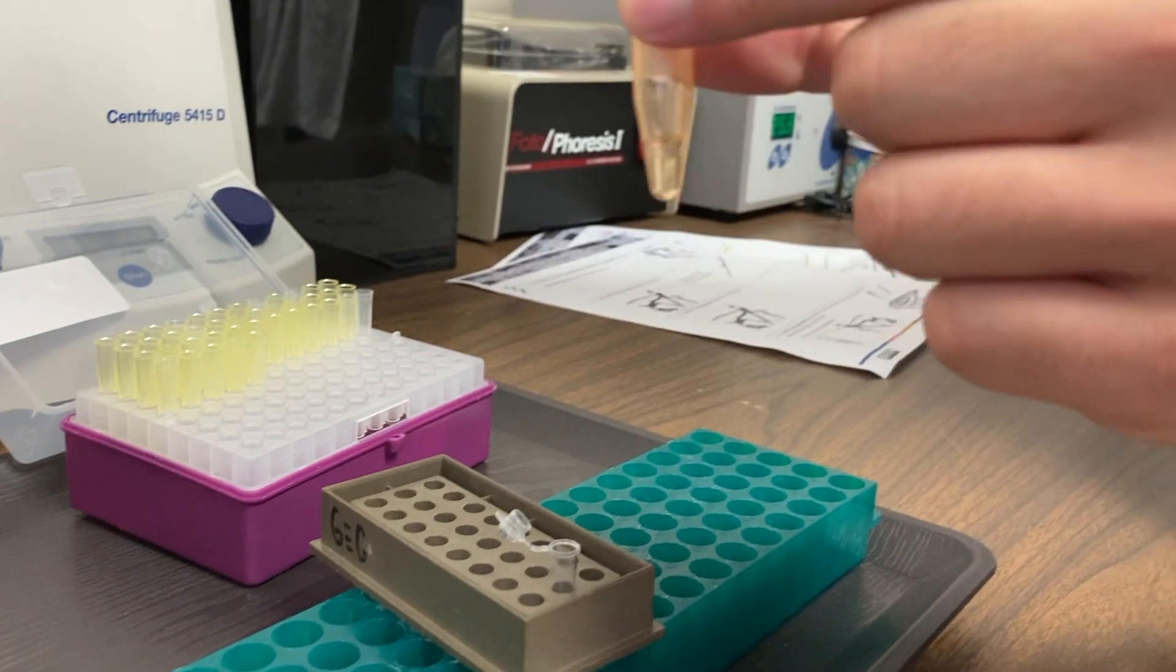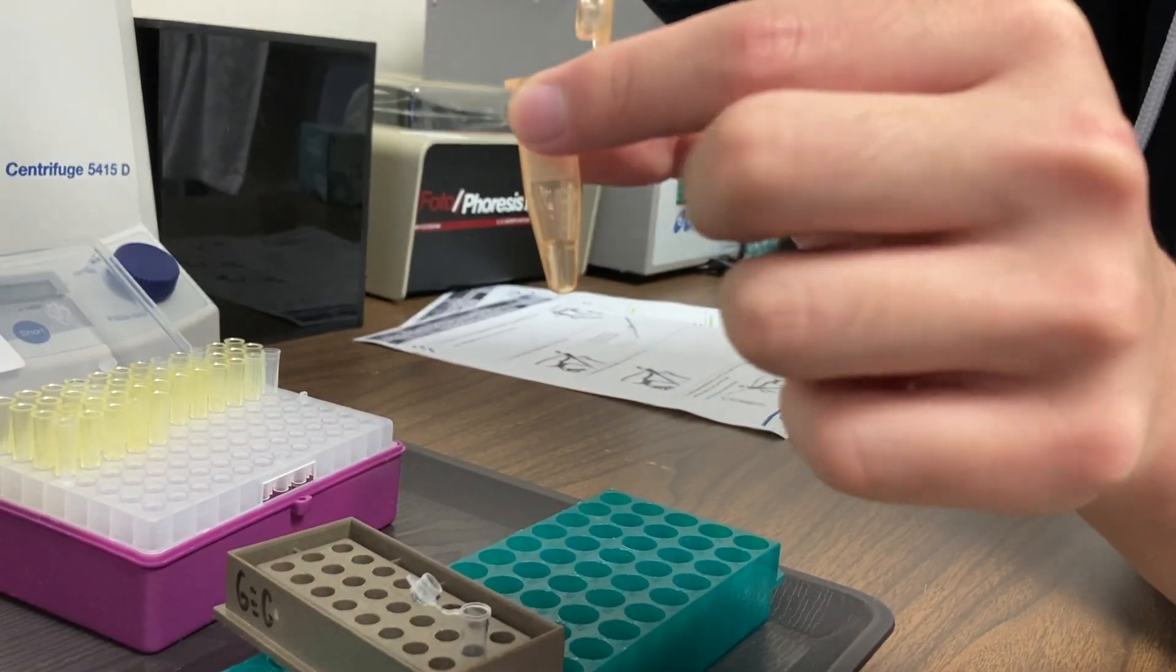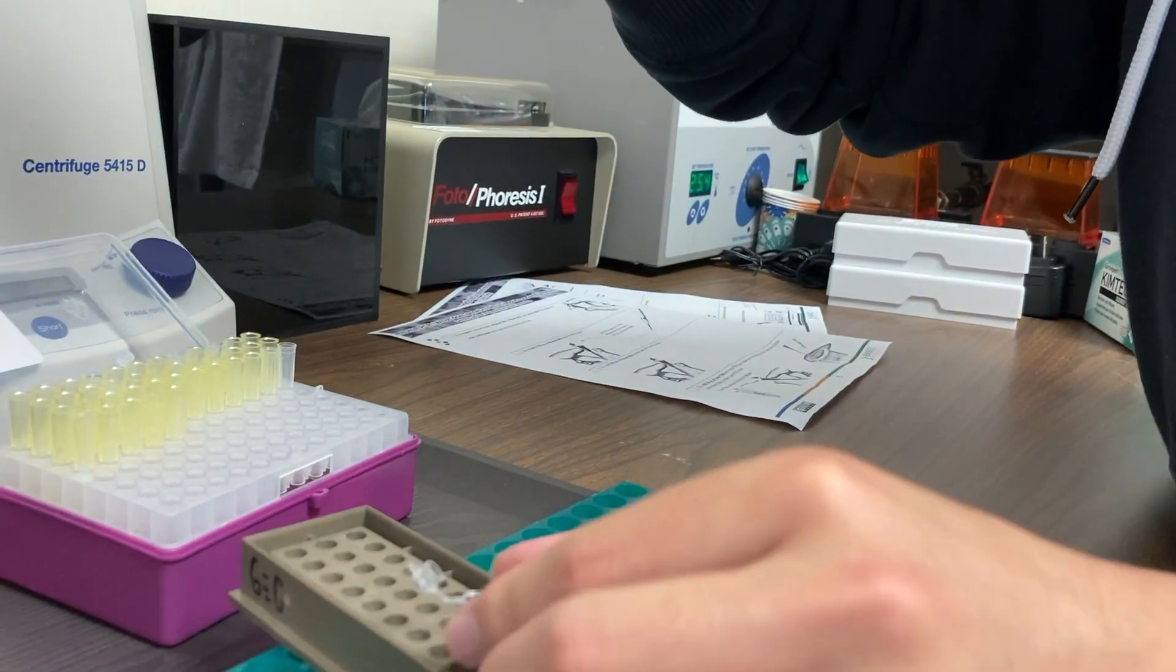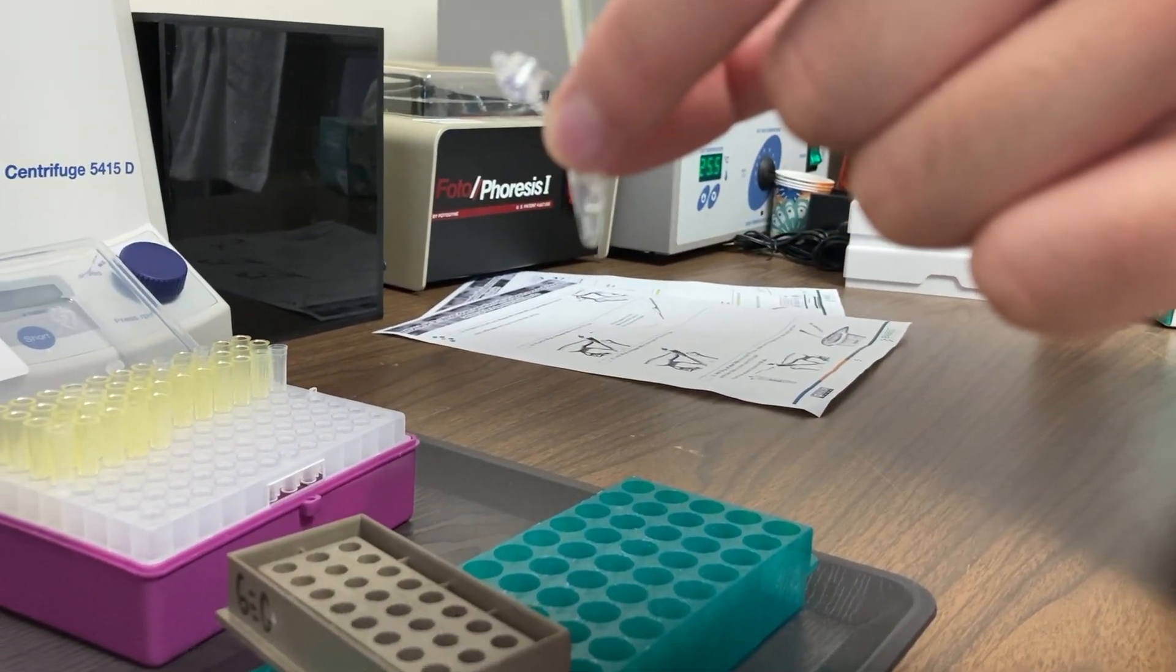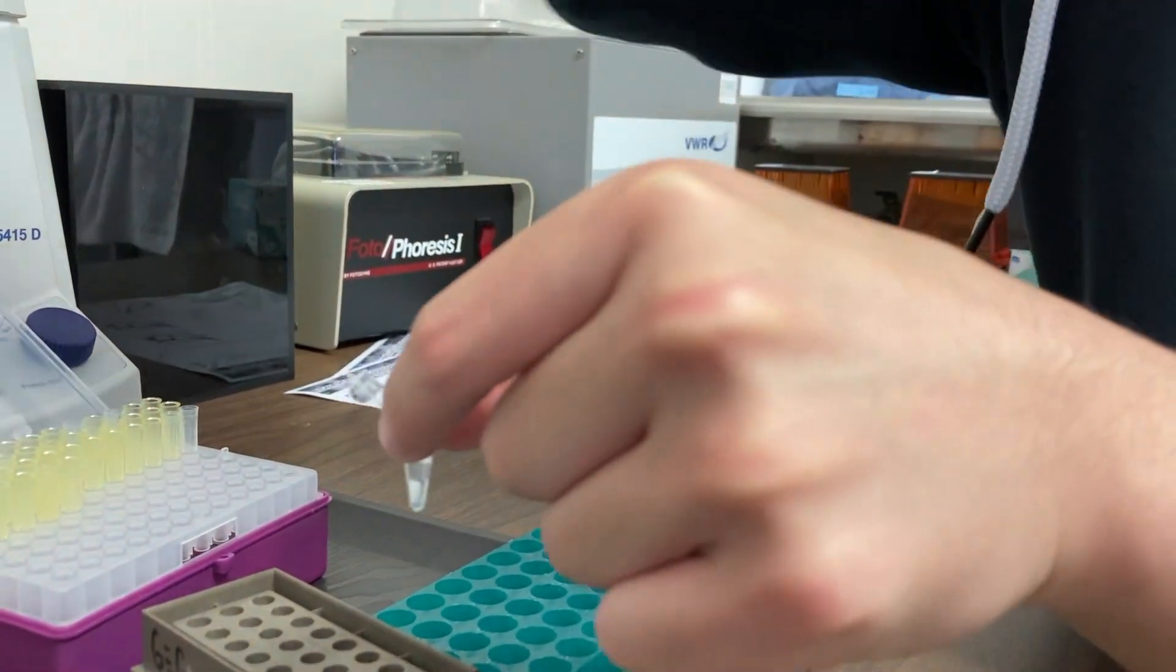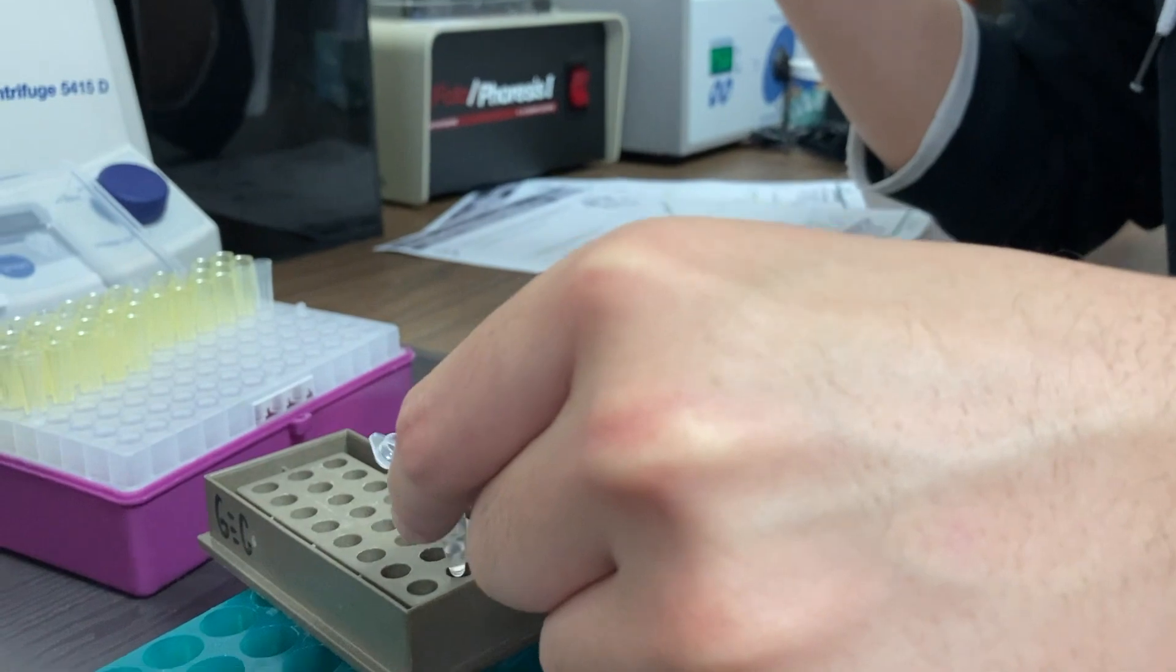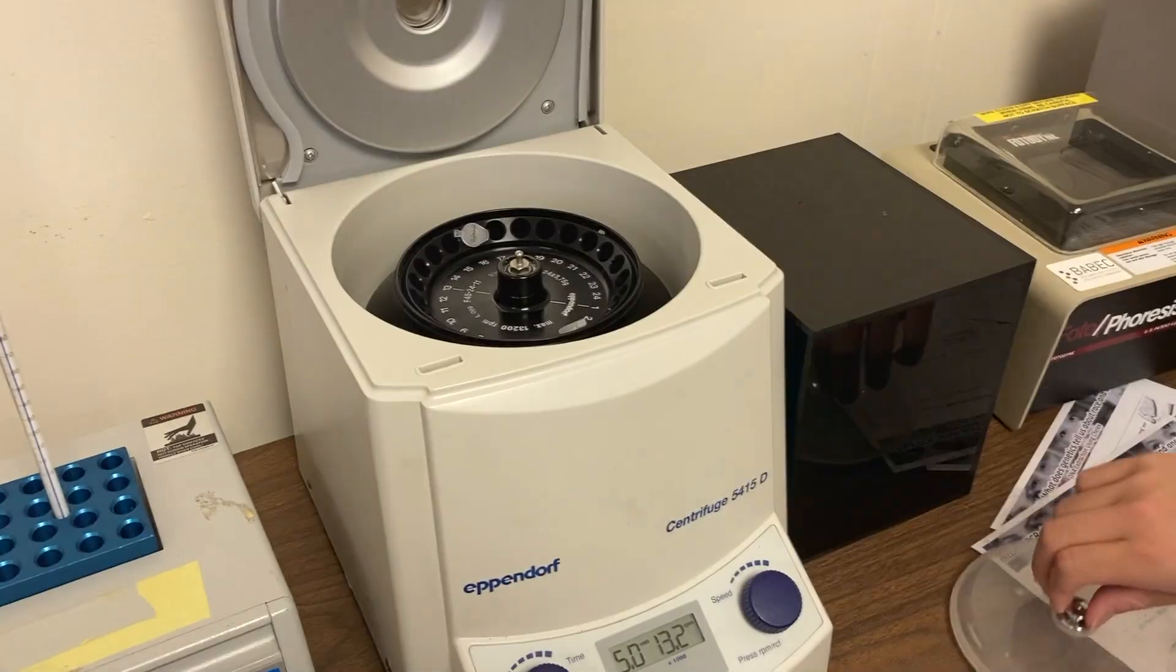After that, we'll get a fresh tip and we'll add our primer mix. What the primer mix does is it allows us to make millions of copies of our exact target DNA. We don't want to make millions of copies of any DNA. The primer mix allows us to be specific about what we're amplifying. So we've added our primer mix and our master mix to our tube.